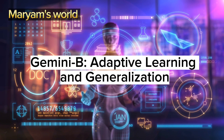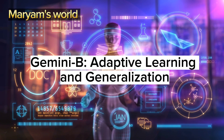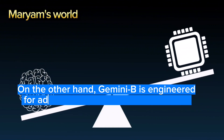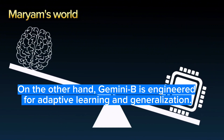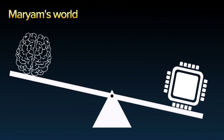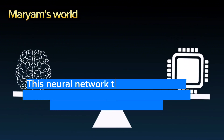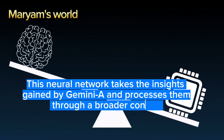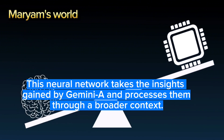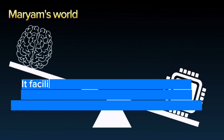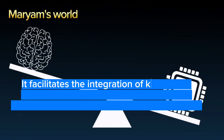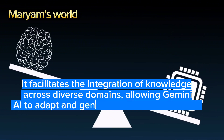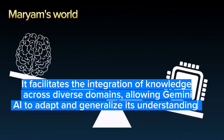Gemini B, on the other hand, is engineered for adaptive learning and generalization. This neural network takes the insights gained by Gemini A and processes them through a broader context. It facilitates the integration of knowledge across diverse domains, allowing Gemini AI to adapt and generalize its understanding.